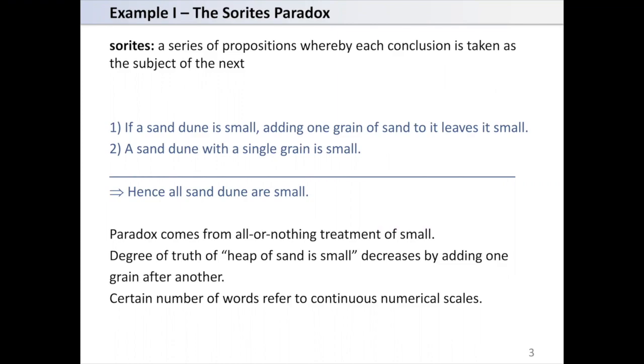The conclusion is that hence all sand dunes are small. Here the paradox comes from all-or-nothing treatment of small. The degree of truth of 'heap of sand is small' decreases by adding one grain after another. Certain number of words refer to continuous numerical scales.